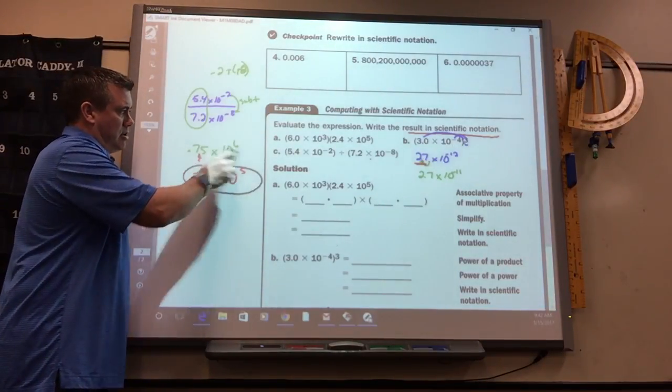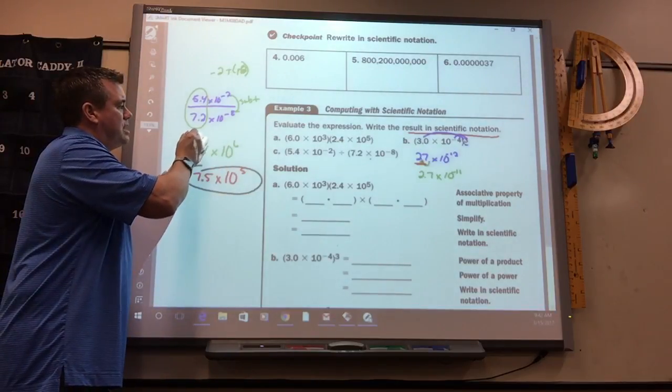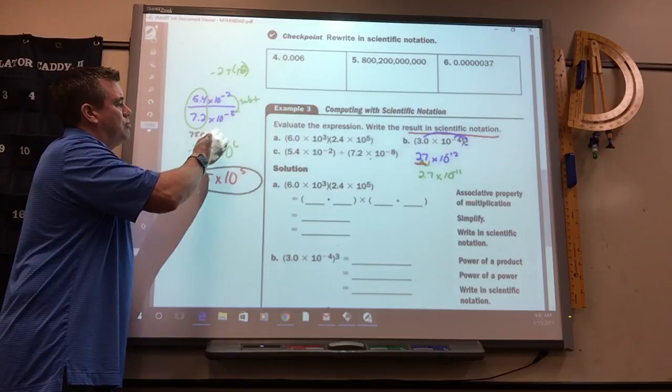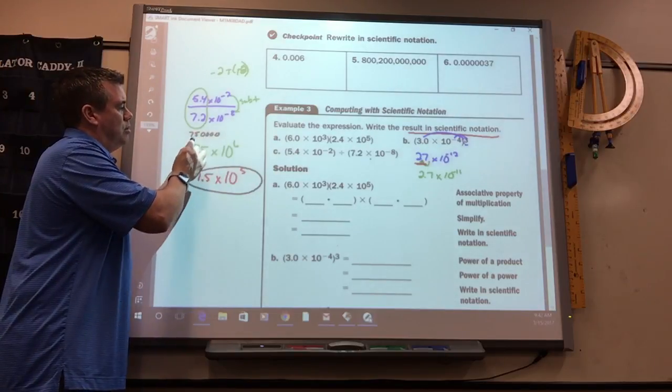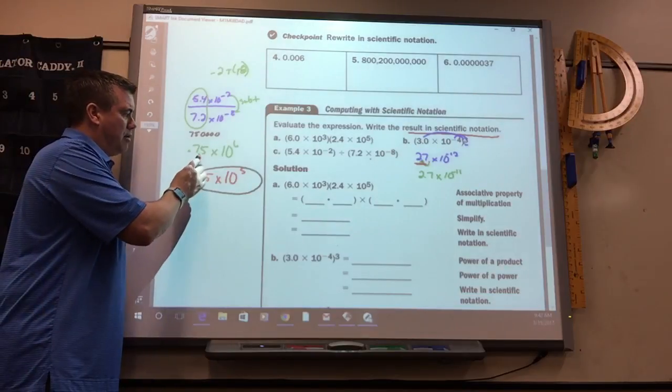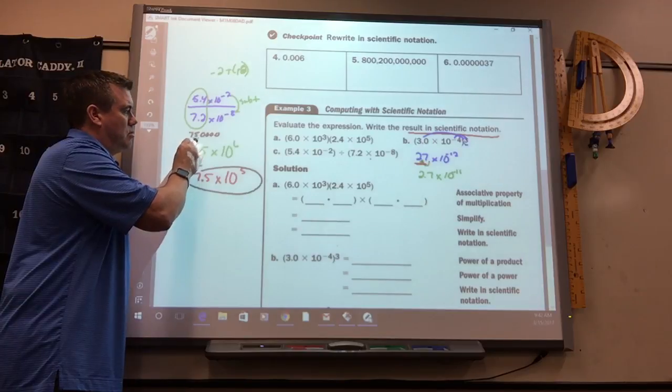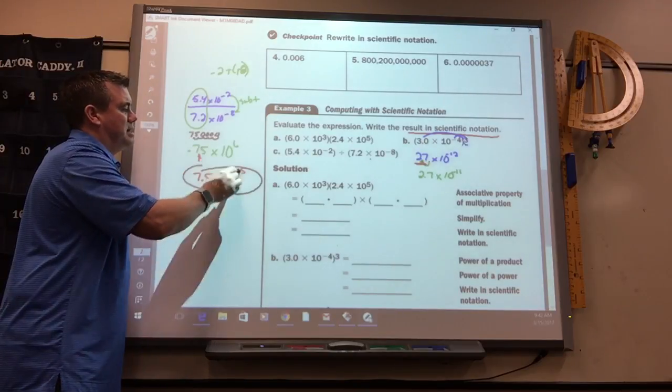See, originally, the actual problem is you've got to move it 6 spots. So, it'd be 7, 5, 1, 2, 3, 4, right? I moved it 1, 2, 3, 4, 5, 6. But, now, if the decimal is here, I'd only have to move it 1, 2, 3, 4, 5 spots.